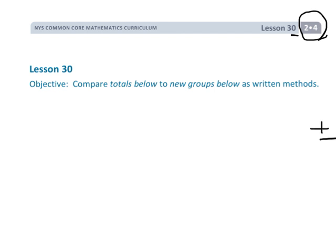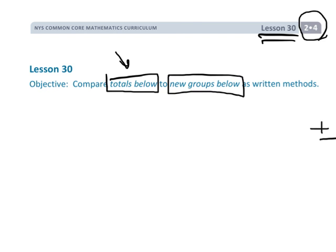This is Grade 2, Module 4, Lesson 30, and we are going to be comparing two methods for addition. One, Engage New York is calling the Totals Below method — that's not an official name, by the way. And the other method they're calling the New Groups Below method. That's also not an official name, so you don't have to have your students memorize them.